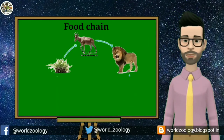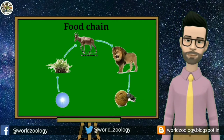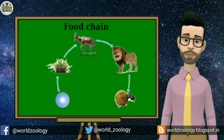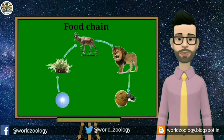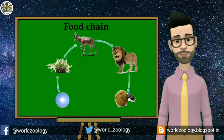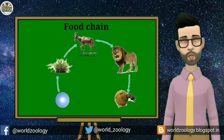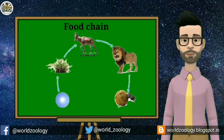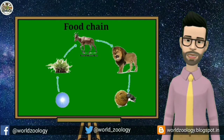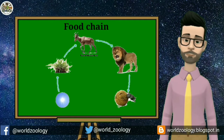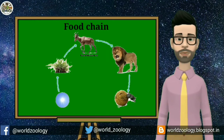In the animal community, the plant-eating animals or herbivores are the primary consumers. The herbivores in turn are fed upon by the secondary consumers, which may include carnivores or omnivores.